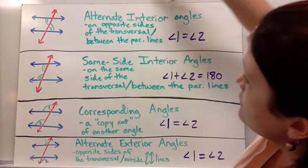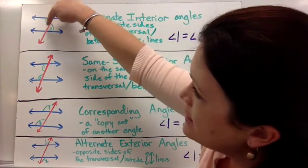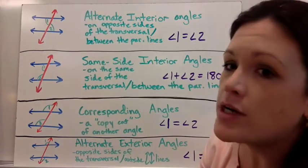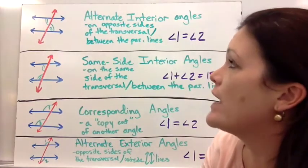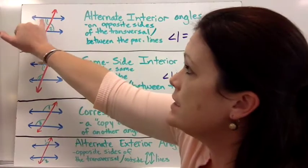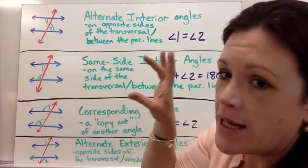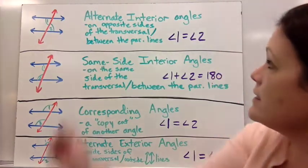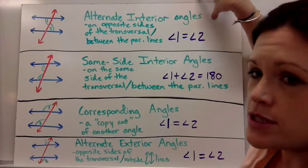Notice alternate interior angles are inside the parallel lines but they're on alternate sides of the transversal. That's why we call them alternate interior angles. They're inside those two blue lines and they're on alternate sides of the red transversal line. We just need to memorize that those would be equal to each other.